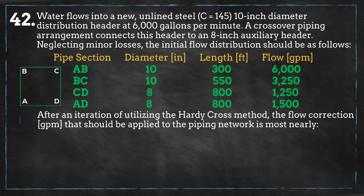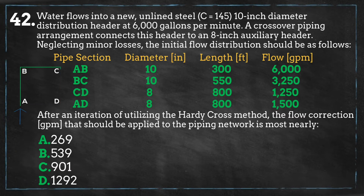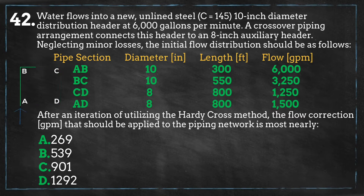After one iteration of the Hardy Cross method, the flow correction value that should be applied to the network is most nearly: A) 269, B) 539, C) 901, or D) 1292. Pause the video and give yourself five minutes to solve the problem.